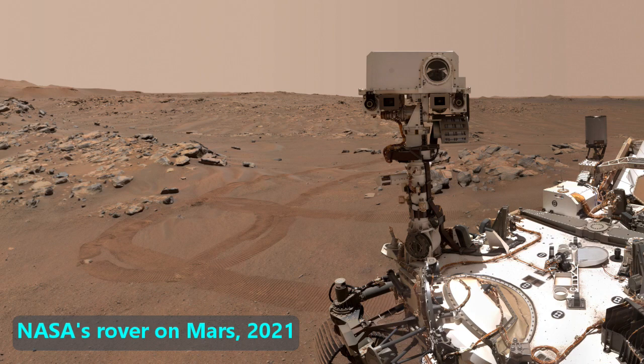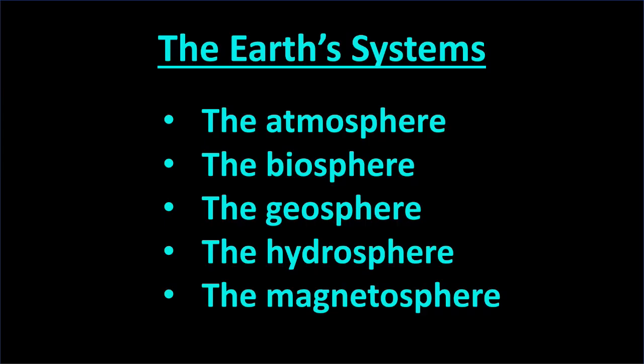Unlike Mars and other planets that we have studied, the Earth has five major systems that interact with each other and appear to make life possible. Those systems are the atmosphere, biosphere, geosphere, hydrosphere, and magnetosphere.